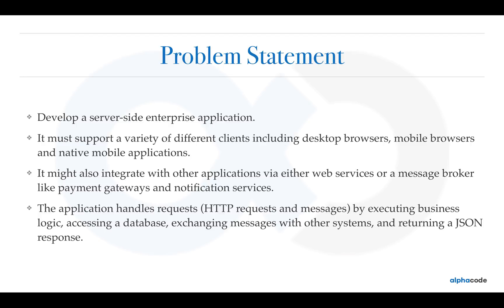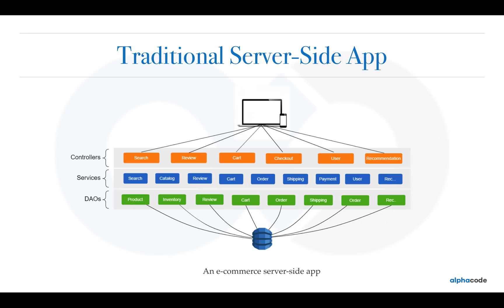So what does a typical backend of this sort look like? You first create a project — it might be a Node.js project with certain dependencies packaged within your application. If it's Java, you'll have a pom or Gradle file with dependencies, packaged into a JAR or WAR file. You then create multiple packages, each with corresponding logic. This is a typical backend application — an e-commerce server-side app — with controllers handling API requests from desktop, mobile phone, or any other client.